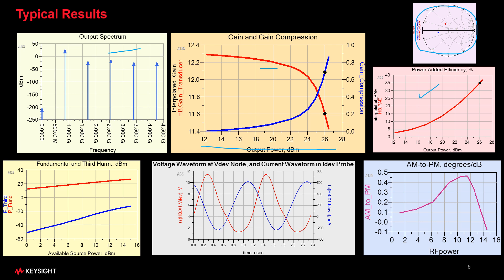On the lower row, here's a familiar graph of the fundamental power and the third-order power as we swept the input power. This is a graph that's commonly used to get the third-order intercept of a circuit.